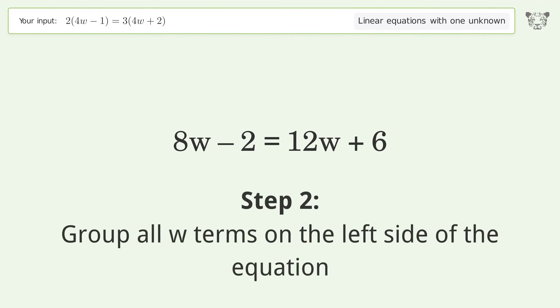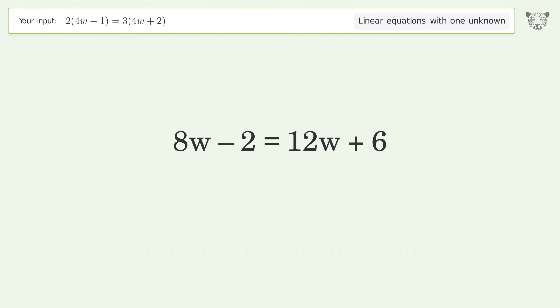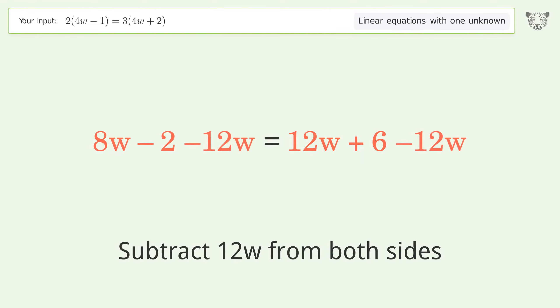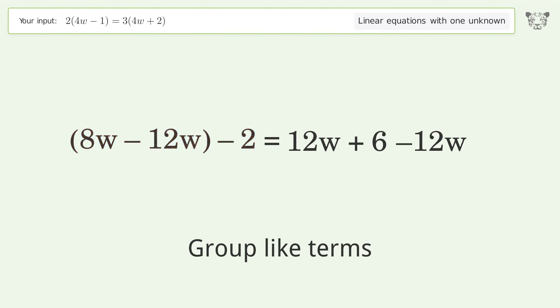Group all w terms on the left side of the equation. Subtract 12w from both sides. Group like terms. Simplify the arithmetic.